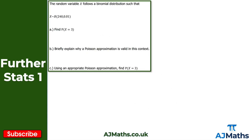For question 1, we have a random variable x which follows a binomial distribution with parameters 240 and 0.01. For part a, we're asked to find the probability that x equals 3. Calculating this directly for the binomial distribution should be nice and straightforward - this is essentially an A-level maths part. I'm going to use my calculator to calculate this probability.